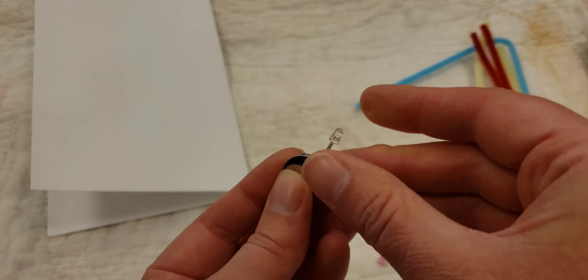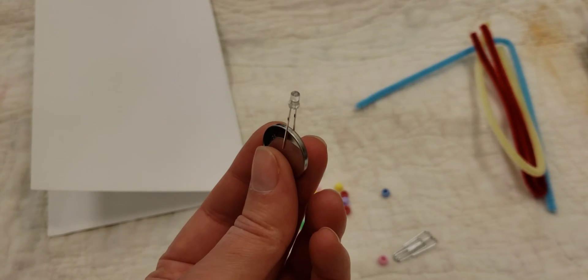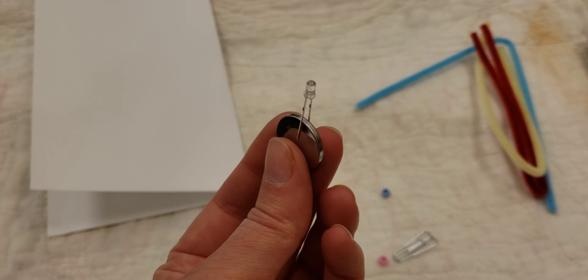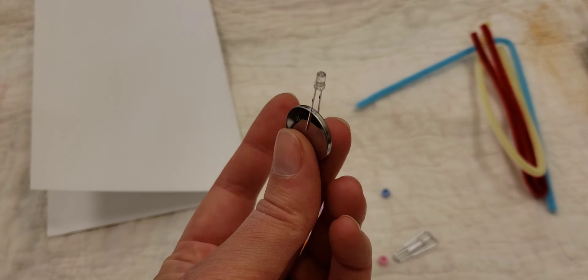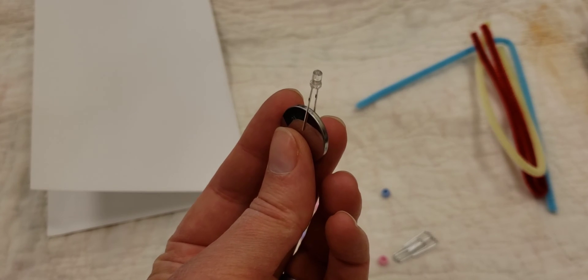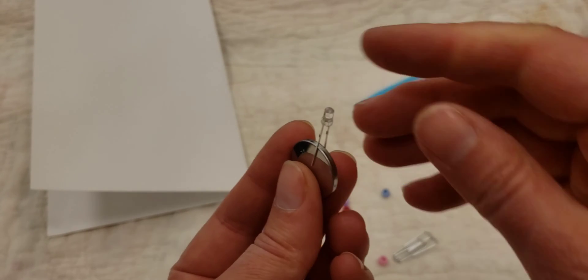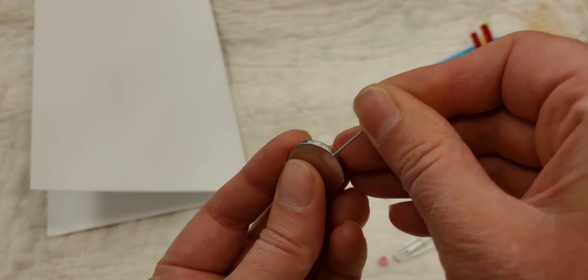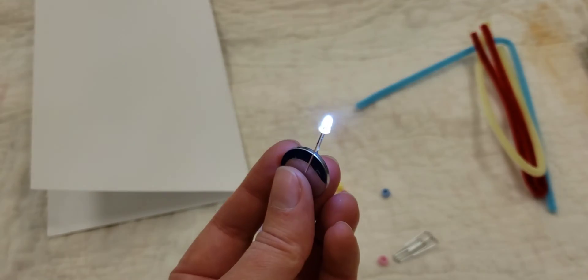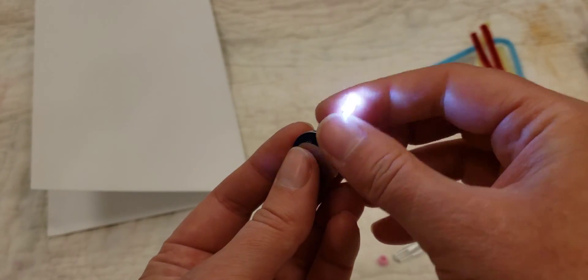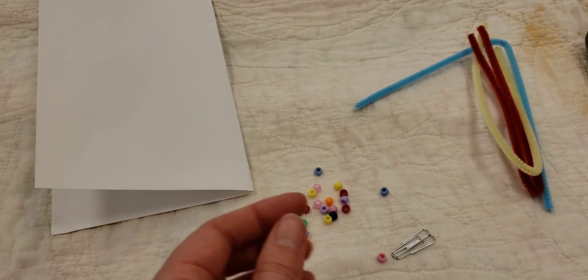If it doesn't that means that it is probably turned the wrong way. It could mean that either the battery or the LED light is dead but it most likely means it's turned the wrong way so just turn it the other way and it should light up. Okay so we know that works.